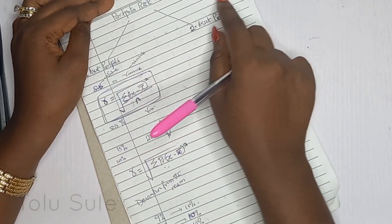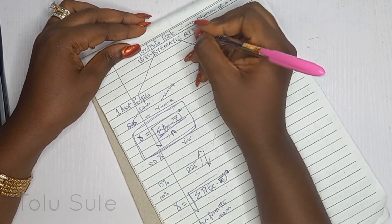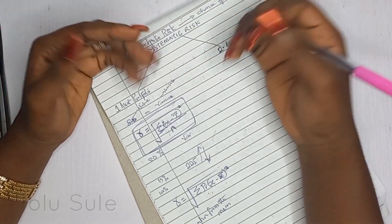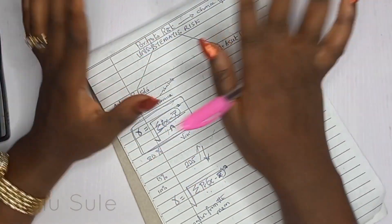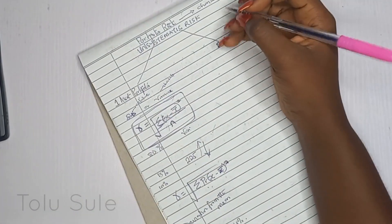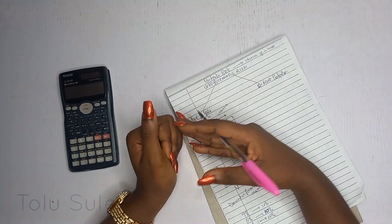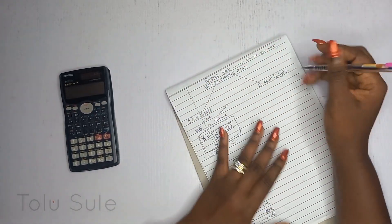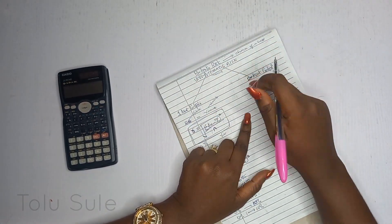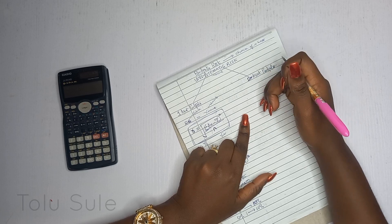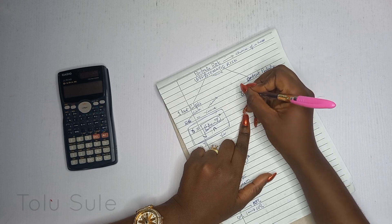This risk we've been calculating is unsystematic risk — very important. Unsystematic risk is a risk that can be diversified; it can be managed, eliminated, or reduced. This is different from systematic risk, which cannot be eliminated. Systematic risk includes things like interest rates and inflation — what happens in the economy and the system.